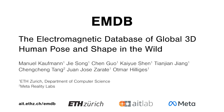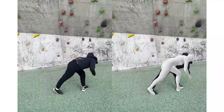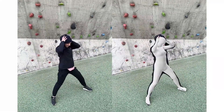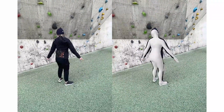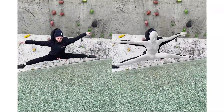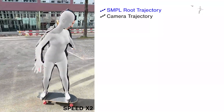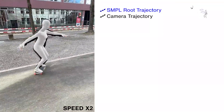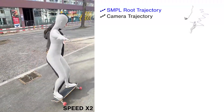We present EMDB, the electromagnetic database of global 3D human pose and shape in the wild. EMDB is a novel dataset that contains high quality 3D SMPL pose and shape parameters for in-the-wild videos. To provide this data we use up to 12 body-worn wireless electromagnetic sensors and a handheld iPhone to capture human motion. Together with accurate body poses and shapes, we also provide global camera poses and body route trajectories as shown in this sequence.